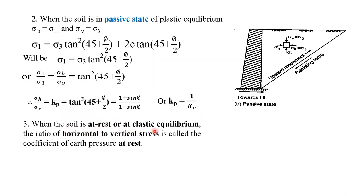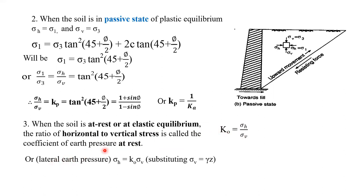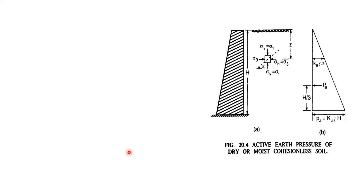When the soil is at rest or at elastic equilibrium, the ratio of horizontal to vertical stress is called the coefficient of earth pressure at rest, K₀. We can write σ_h = K₀·σ_v. For a soil element at depth z, the vertical pressure σ_v = γz, so the lateral pressure on the retaining wall is σ_h = K₀·γz.